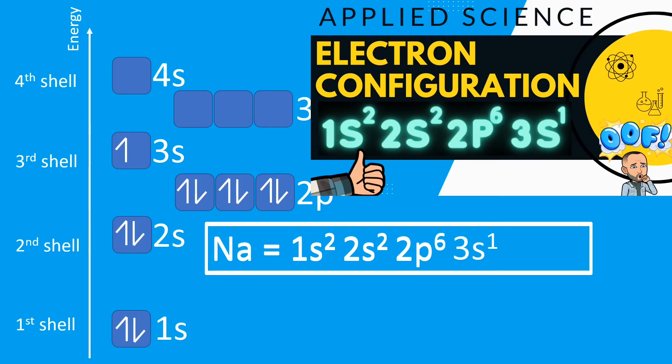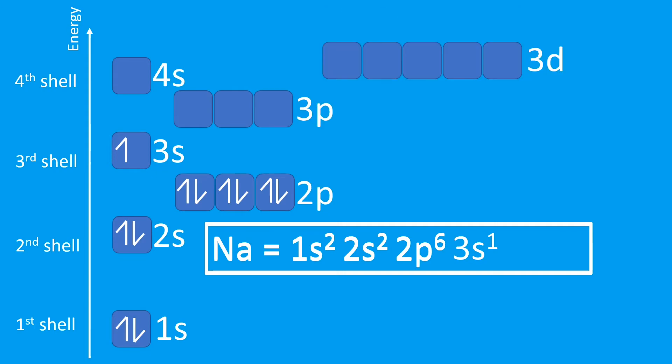Now it's time to look at the electron configuration for these cations and anions. Again, if you haven't seen the previous video, this won't make much sense, so make sure you go and watch that first. The electron configuration for a sodium atom is 1s² 2s² 2p⁶ 3s¹. Now when it forms a positive cation...